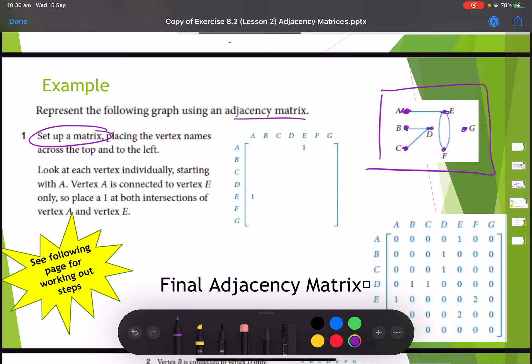That's one, two, three, four, five, six, seven, which means I'm going to have a matrix that is seven by seven. So the first thing that I do is I look at each vertex individually. I'm going to start off with a because that's the easiest one to start off with, and then see how it's connected to each one. So let's have a look.